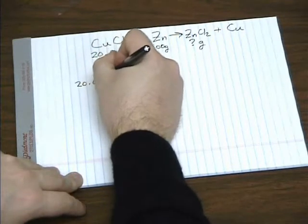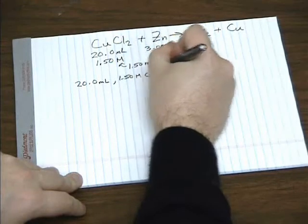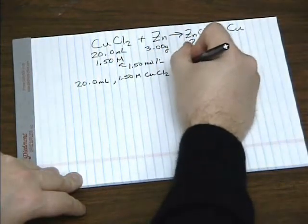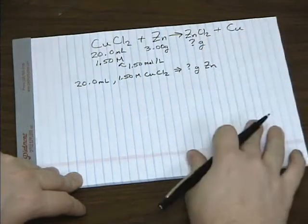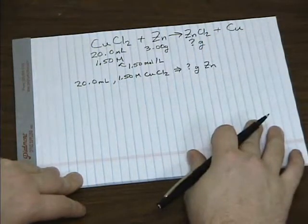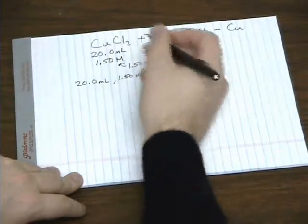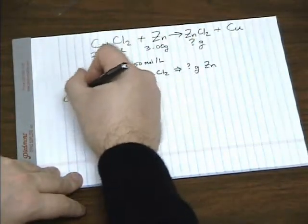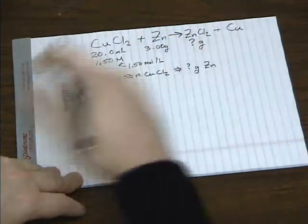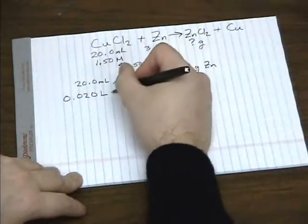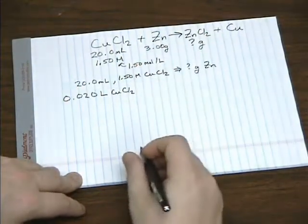Let's go ahead and start with the 20 milliliters of 1.5 molar copper chloride to see how many grams of zinc we need. All right, so 20 milliliters is 0.02 liters. I'll go ahead and do the conversion just to save me some pad space. It's that many liters of copper 2 chloride.